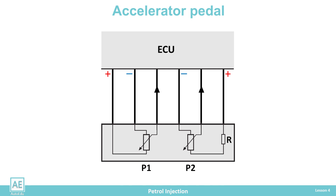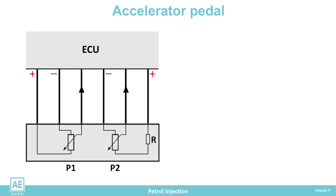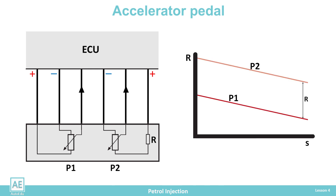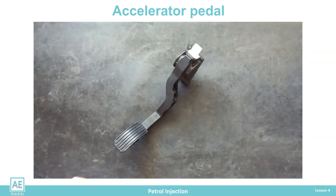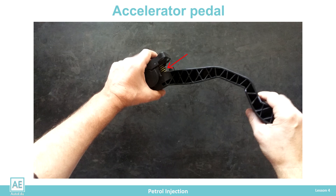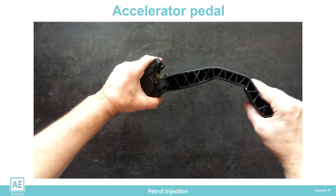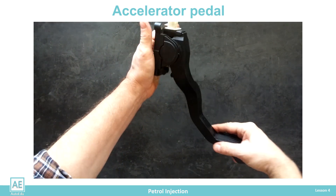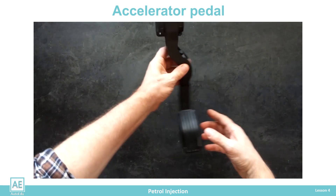For safety, each potentiometer in the sensor receives a separate 5-volt power supply from the ECU and individual lines for the signal from the slider to the computer. During operation, the ECU constantly compares the data obtained from these two sensors. To distinguish the sensors, an additional resistor is connected to one potentiometer, so the values of the output signals are spaced by the value of the added resistance. A spring is built into the pedal that simulates the resistance of the throttle opening via the Bowden cable, so drivers did not notice the difference during the transition to a cable-free system in new vehicles.